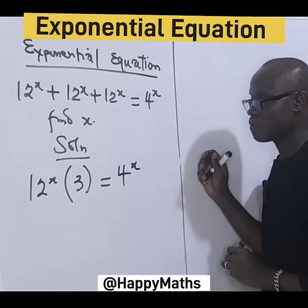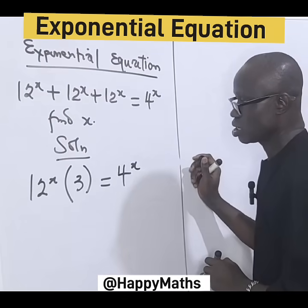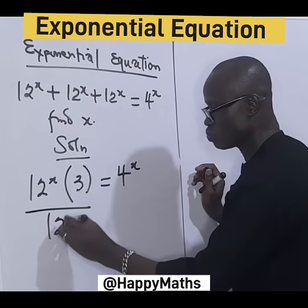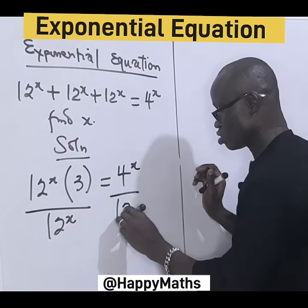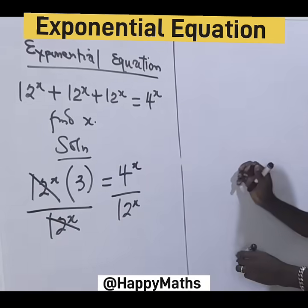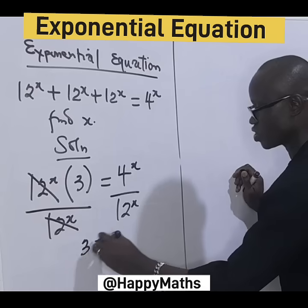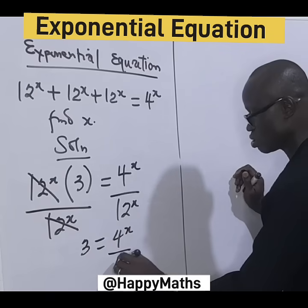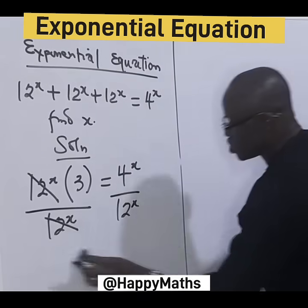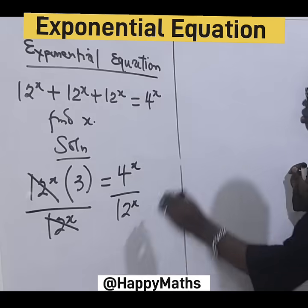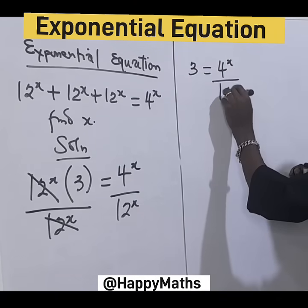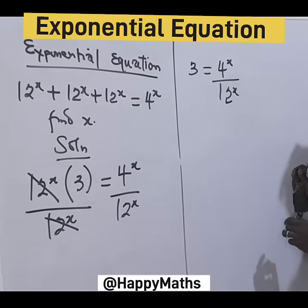Now, what do we do from here? Let's divide both sides by 12 raised to the power of s. So we are left with 3 equal to 4 raised to the power of s over 12 raised to the power of s.